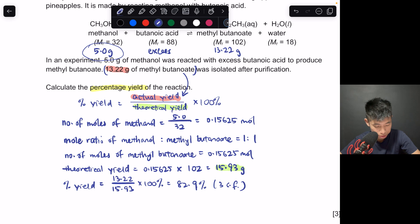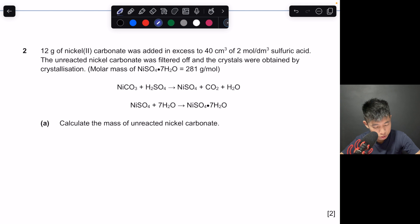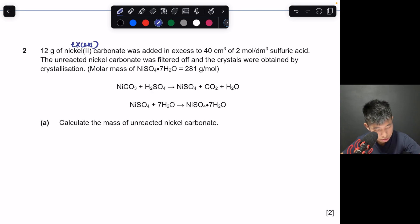Let's try another question. You may want to pause the video. Read it first, then I'll go through with you. In question 2, we have 12 grams of nickel carbonate in excess to 40 cm³ of 2 mol per dm³ sulfuric acid, which is the limiting reactant. That means all the acid will be reacted. What is the mass of unreacted nickel carbonate? So let's calculate the number of moles of sulfuric acid first, which is concentration 2 times volume 40 over 1000. Remember convert to dm³.